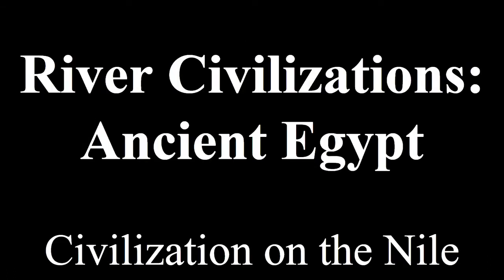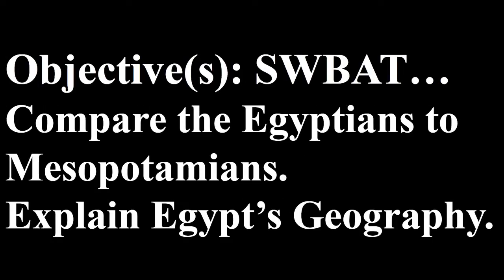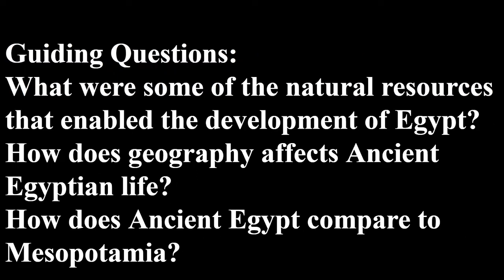River Civilization, Ancient Egypt — Civilization on the Nile. Here are the state standards and objectives. Students will be able to compare the Egyptians to Mesopotamians and also explain Egypt's geography. Here are the guiding questions: What were some of the natural resources that enabled the development of Egypt? How does geography affect ancient Egyptian life? How does ancient Egypt compare to Mesopotamia?